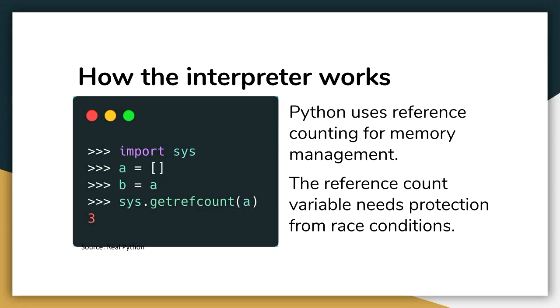Python's interpreter uses something called reference counting for memory management. Every object in Python that is created has a reference count variable, which keeps track of all the references being pointed to that object. For example, we have an empty list object here being referenced first by A, then by B, and then getRefCount is also referencing it — so it totally has three references. This reference count variable works behind the scenes and keeps track of every single object made in Python.